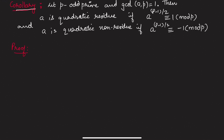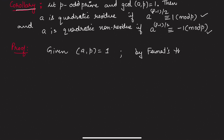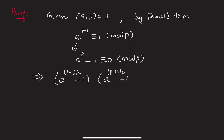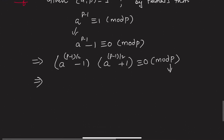Euler's criteria gives a nice corollary: let p be an odd prime and gcd(a, p) = 1. Then a is a quadratic residue if a^((p-1)/2) ≡ 1 (mod p), and a quadratic non-residue if a^((p-1)/2) ≡ -1 (mod p). To prove this, since gcd(a, p) = 1, by Fermat's theorem a^(p-1) ≡ 1 (mod p). Rewriting: a^(p-1) - 1 ≡ 0 (mod p), which factors as (a^((p-1)/2) - 1)(a^((p-1)/2) + 1) ≡ 0 (mod p).